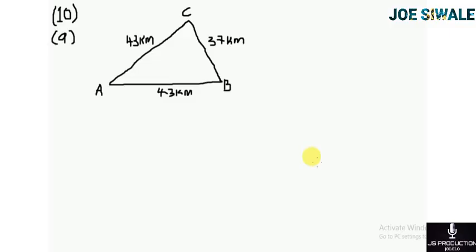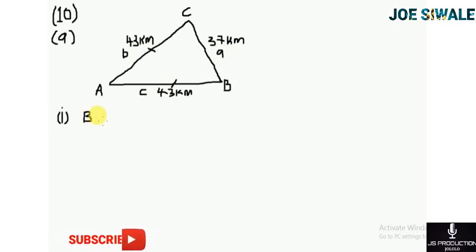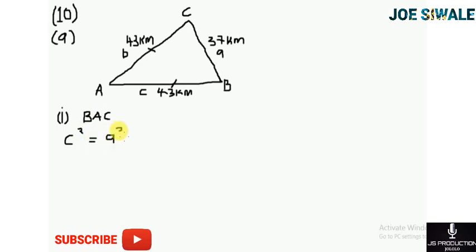To calculate angle BAC, I note that triangle ABC is an isosceles triangle, which means length AB equals length AC. I'll use the cosine rule formula, which will help me first calculate angle ACB, and then angle ACB will help me calculate angle BAC.